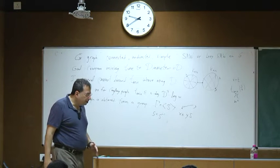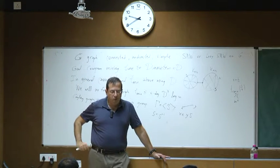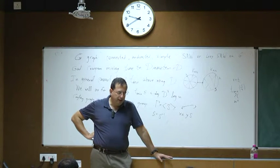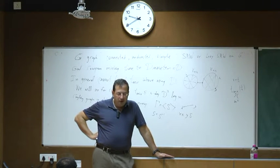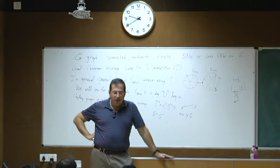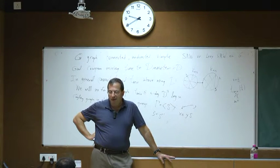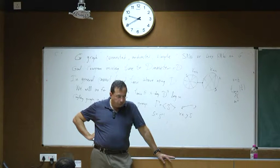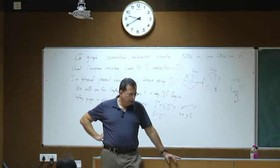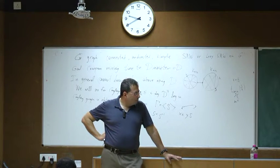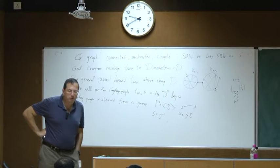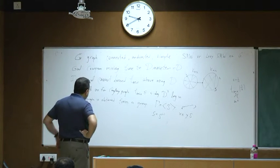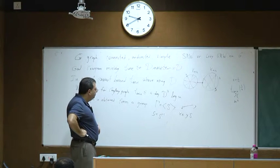There are a lot of Cayley graphs because there are a lot of finite groups. Classical examples are permutation groups and various subgroups of permutations. The ones simplest to visualize are the lattices, the tori, and of course many infinite groups as well, such as free groups. I'll mention one other interesting example later, the lamplighter group.